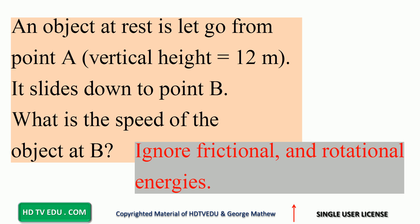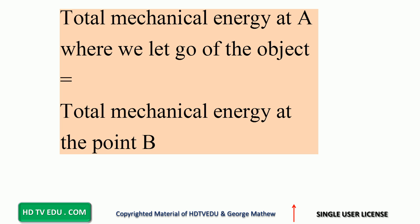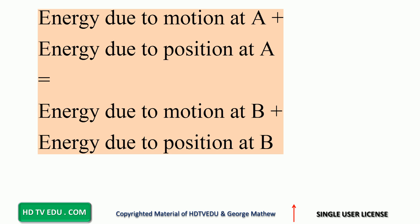Welcome to hdtvedu.com — direct and simple education in seconds. Energy is conserved. Energy due to motion at A plus energy due to position at A equals energy due to motion at B plus energy due to position at B. What is energy due to motion at point A? It's kinetic energy.